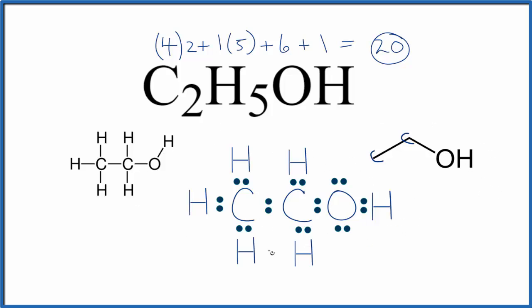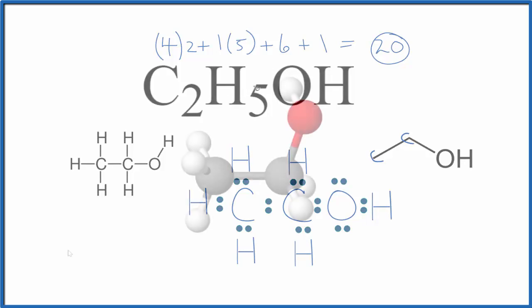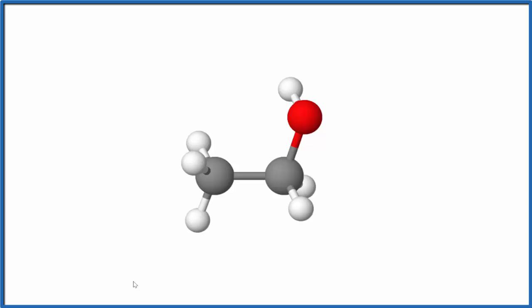But let's take a look at this in three dimensions, and then look a little bit at the polarity for ethanol. So this is what we would have if we looked at this in three dimensions. These are the carbons, or the gray, white, hydrogen, and then the red, the oxygen.